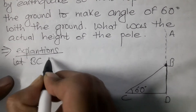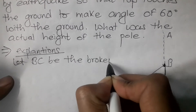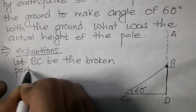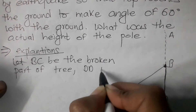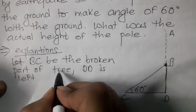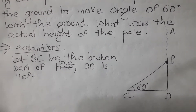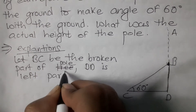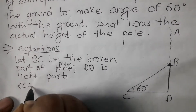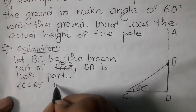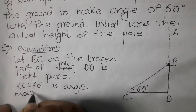Let BC be the broken part of the pole. BD is the left part — the standing part. Angle C is equal to 60 degrees, which is the angle made by the top point with the ground.